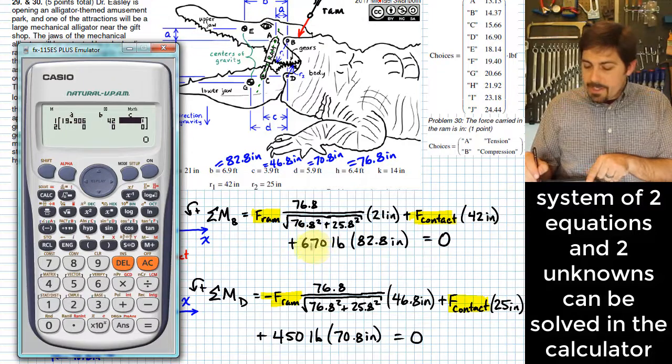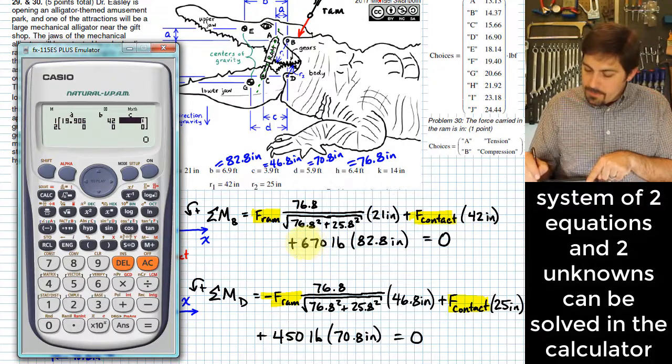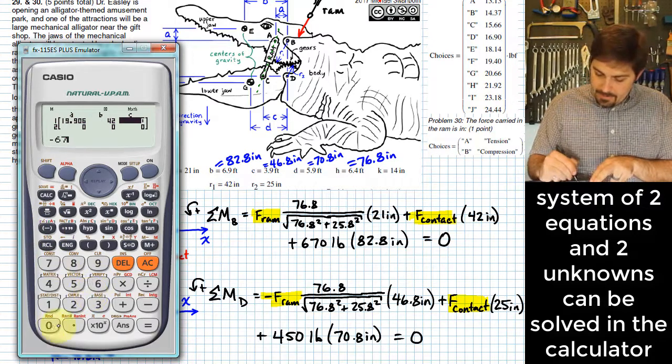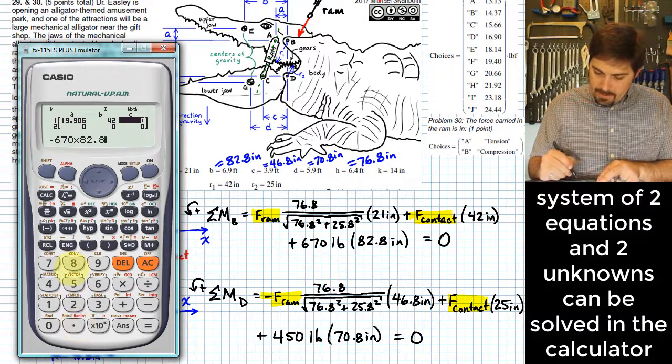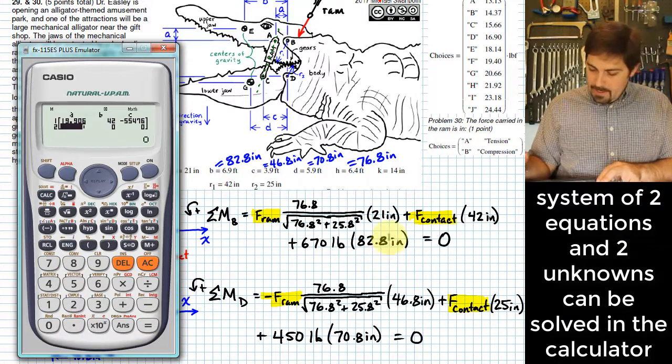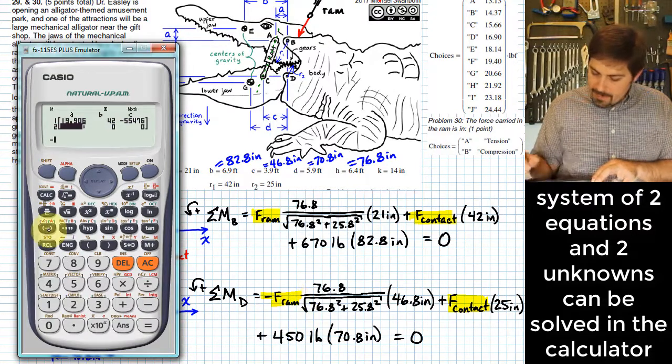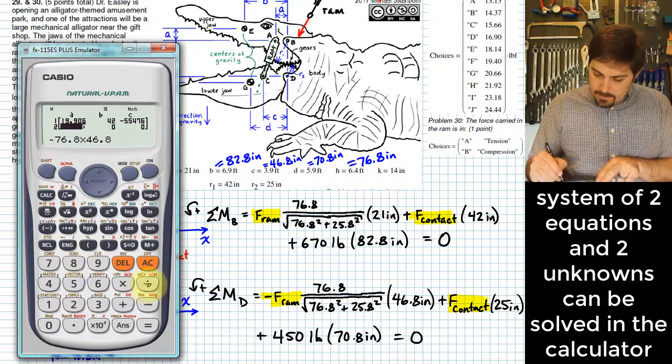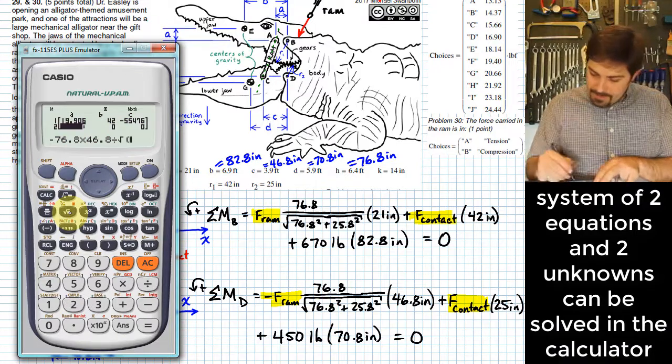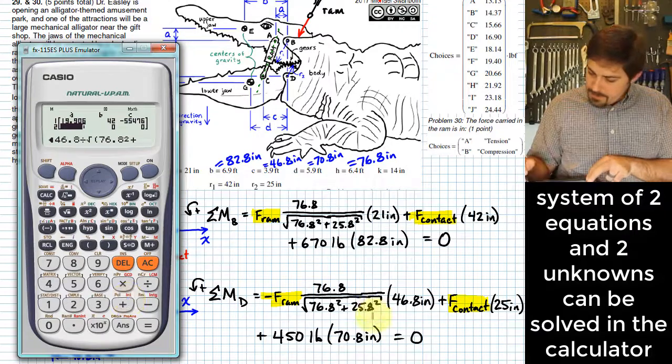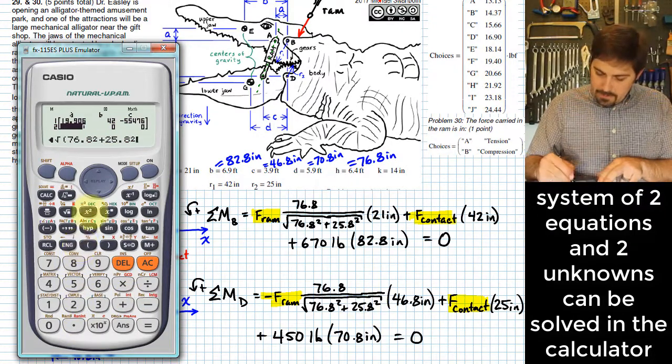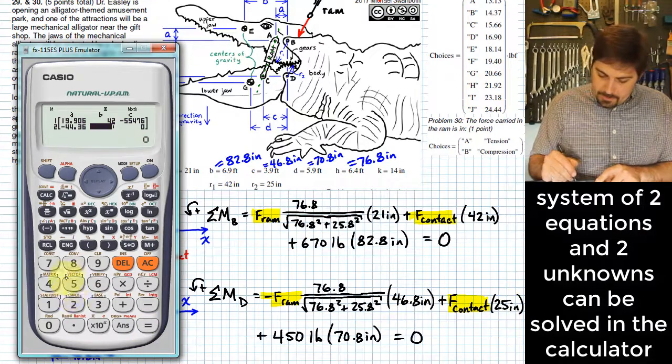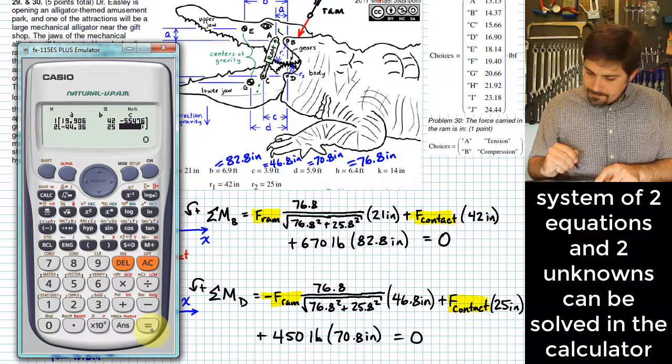Now for this last one, remember that this calculator needs that constant term to actually be on the other side of the equal sign. And if I was to move this term over to the other side of the equal sign, it would negate it. And so I'm going to put in a negative 670 times 82.8. Now we're going to go down to this next equation, and we'll put in a negative 76.8 times 46.8 divided by the square root of 76.8 squared plus 25.8 squared. And I think that takes care of that whole term. The next term is just going to have 25 inches, so 25.